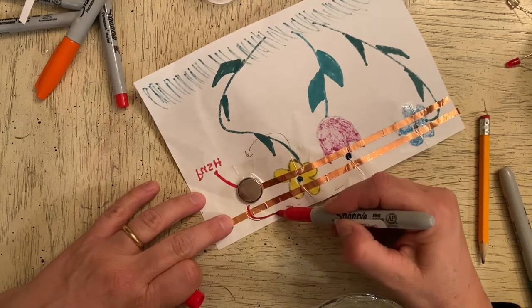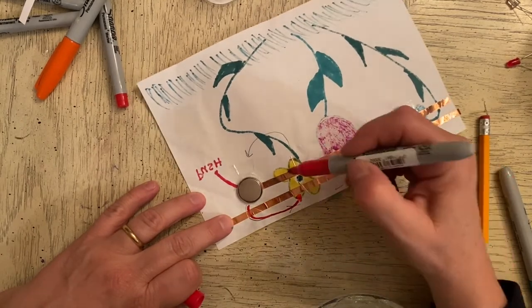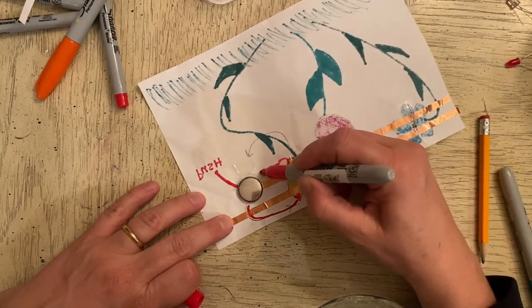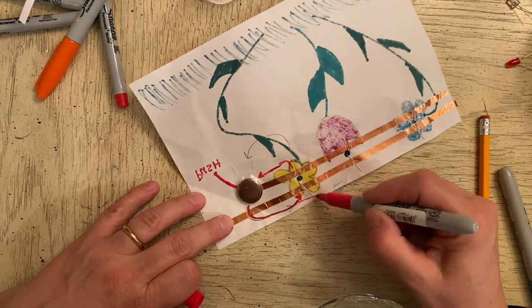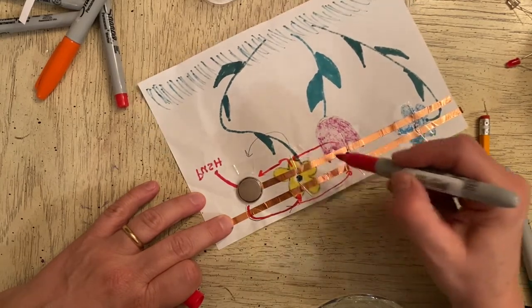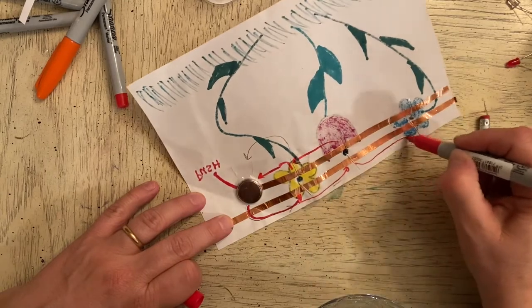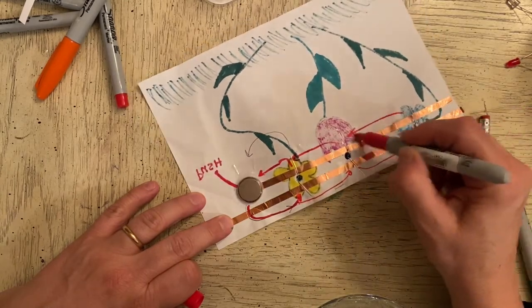I'll make sure that the electricity flows from the battery across the light down the copper tape. It also flows across this light and down the copper tape, and it flows through this light and down the copper tape.